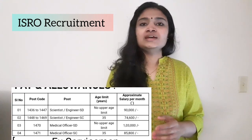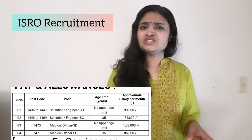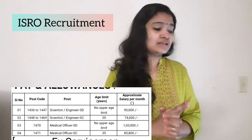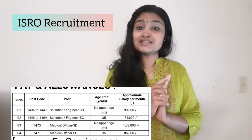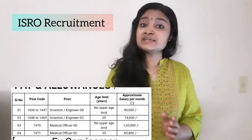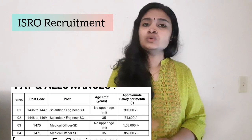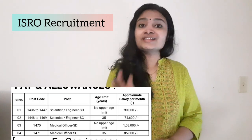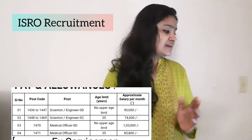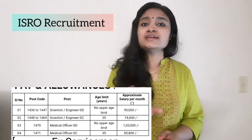The salary for Scientist Engineer SD is very good given the PhD requirement. There is no upper age limit for that post — anyone can apply. For Scientist Engineer SC, the upper age limit is 35 years and the salary is ₹74,600 per month. For Medical Officer SD there is again no upper age limit and the salary is ₹1,03,000 per month. For Medical Officer SC the upper age limit is 35 years and the salary is ₹85,800 per month.